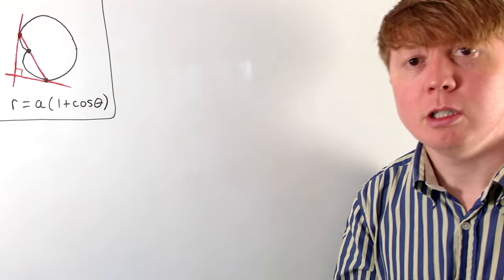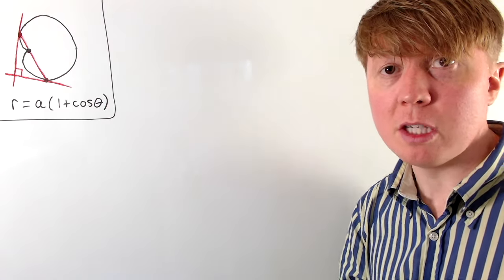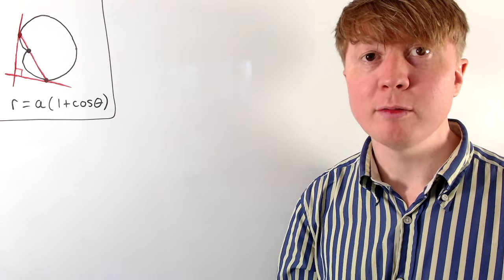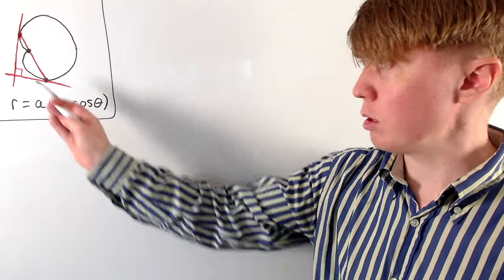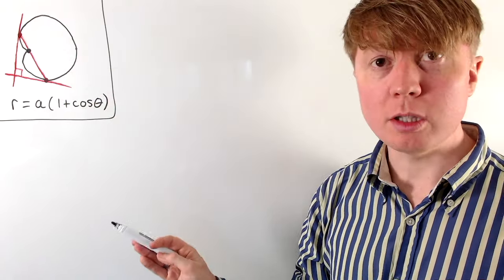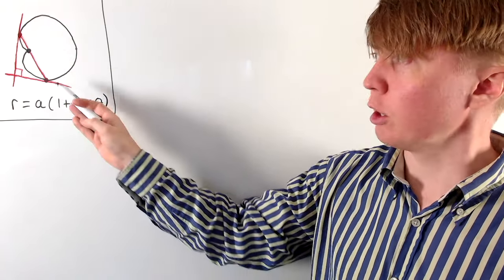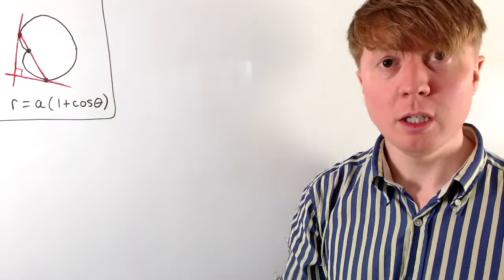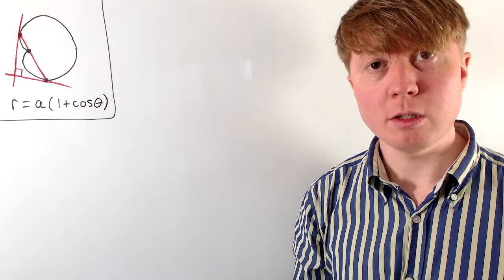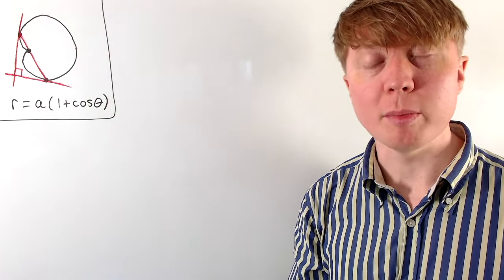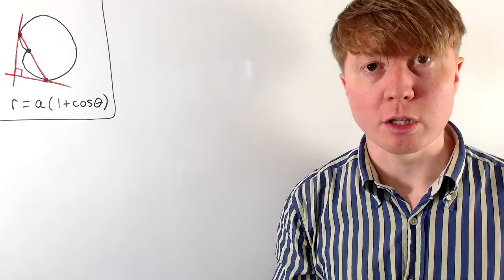The second property of the cardioid is that if we again have any chord passing through the cusp at the origin, and we look at the tangents to the curve at either end of this chord, it turns out that these two tangents are always perpendicular to each other.